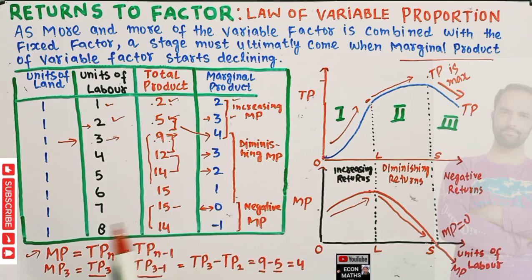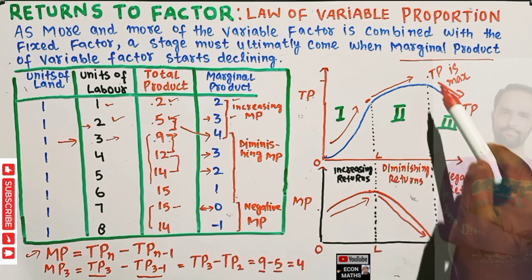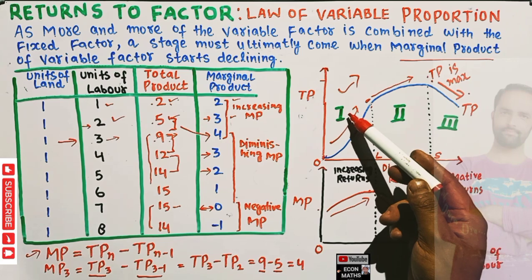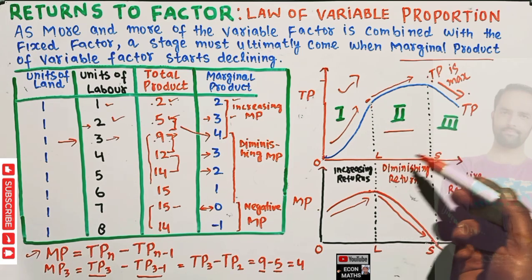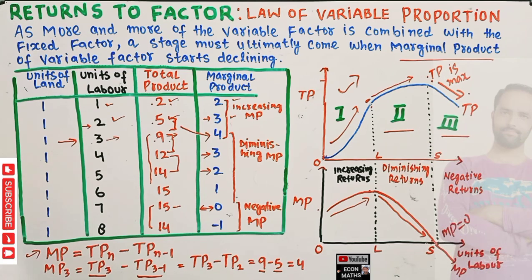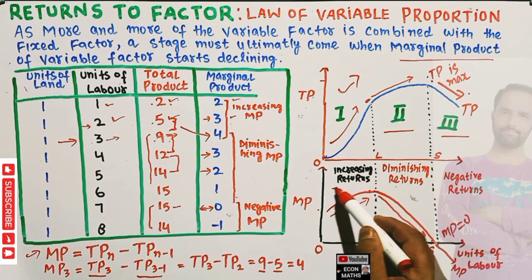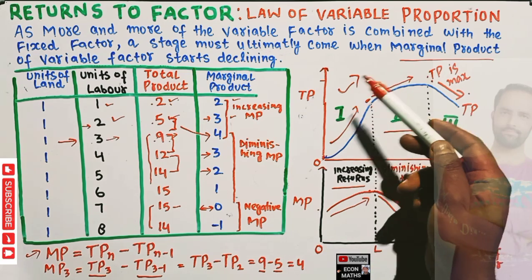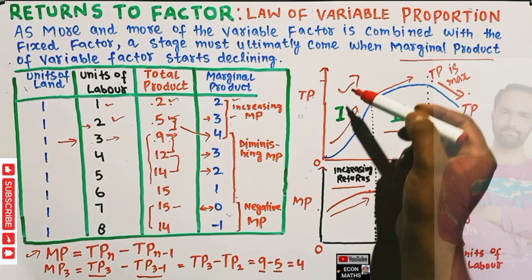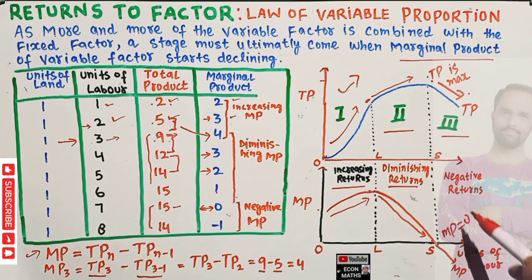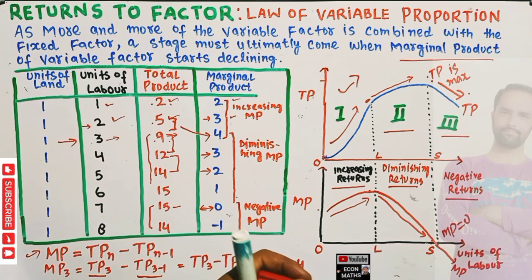When we have seven units of labor, total product is 15. When we have eight units, total product is 14 — so from 15 to 14, total product is declining. The first stage corresponds to increasing returns to the factor, the second stage shows diminishing returns to the factor, and the third stage shows negative returns to the factor.